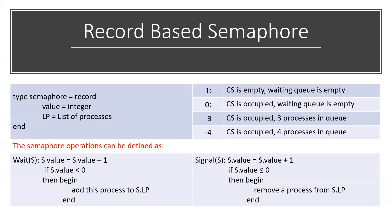Now we will talk about record-based semaphores. Previously, in the last tutorial, we talked about binary semaphores, where the semaphore value is either zero or one. If the value is one, it means we assume the critical section is unoccupied, and the shared variable represents the critical section of the particular process.